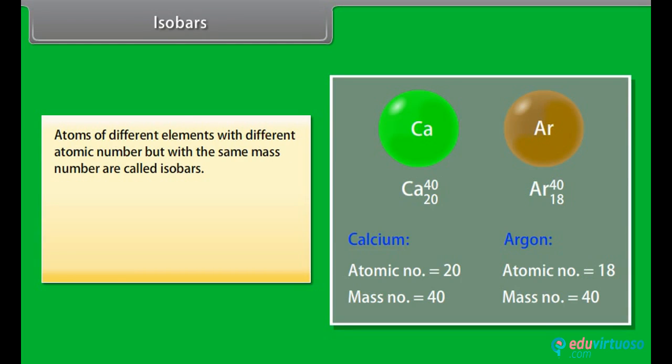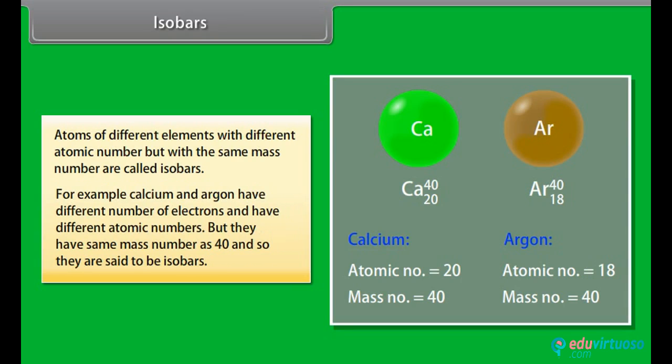Isobars. Atoms of different elements with different atomic number but with the same mass number are called isobars. For example, Calcium and Argon have different number of electrons and have different atomic numbers but they have same mass number as 40 and so they are said to be isobars.